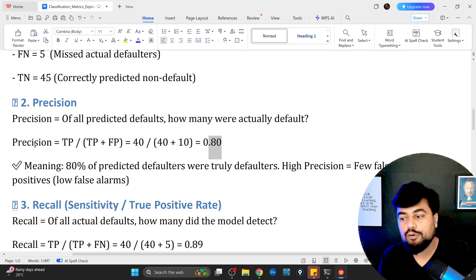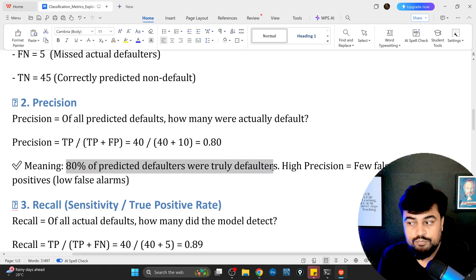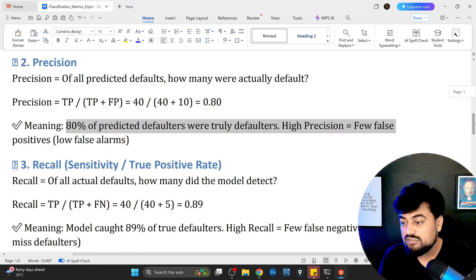What is the meaning of 0.8 precision? This means 80% of predicted defaulters were truly defaulters. So it's a high precision. That is a good thing, that is a good sign.